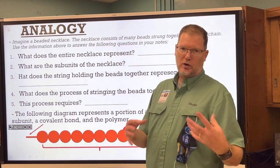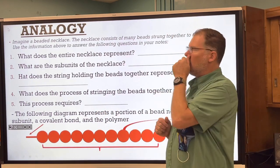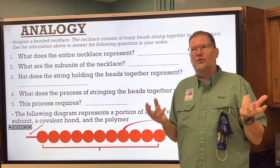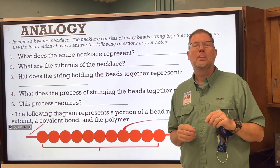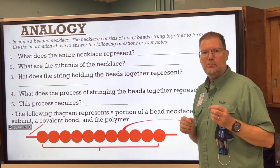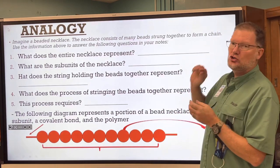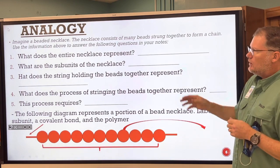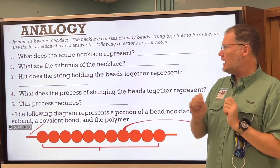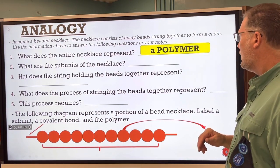Here's an analogy — a comparison of one thing to another. Imagine a beaded necklace, like a plastic bead necklace from Mardi Gras or a pearl necklace with actual real pearls. The necklace consists of many beads strung together with a monofilament like fishing line or string to form a chain. What does the entire chain represent? That's the polymer.